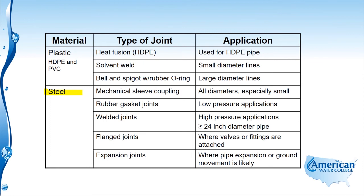Next is steel pipe. There are many different joints for steel. The mechanical sleeve coupling can be used on all diameters but is more typically used on smaller diameters. The rubber gasket joint is used in low pressure applications. Welded joints are used in high pressure applications and on pipe diameters of 24 inches or greater. Flange joints are used where valves or fittings are attached to the steel pipe. Finally, expansion joints are used where pipe expansion or ground movement is likely. You want to remember these different types of joints for the different types of pipe material.